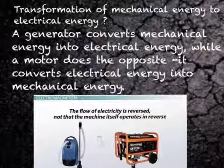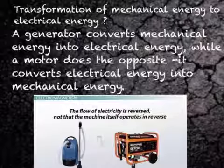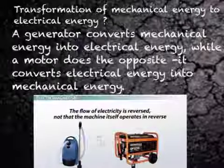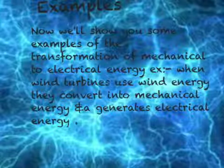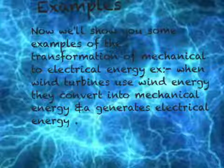So this is the transformation of mechanical to electrical energy. A generator converts mechanical energy into electrical energy, while a motor does the opposite, converting electrical energy into mechanical energy. Even wind turbines do that. These are some examples of the conversion of mechanical to electrical energy.